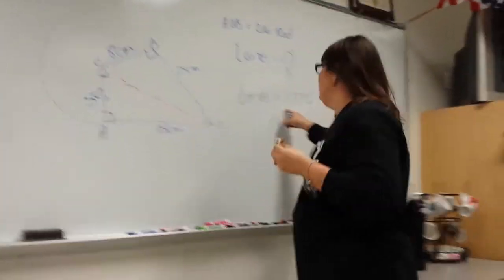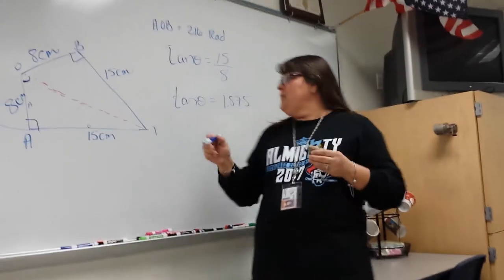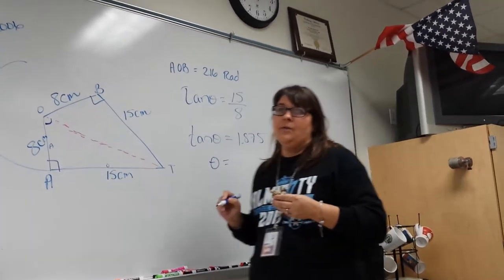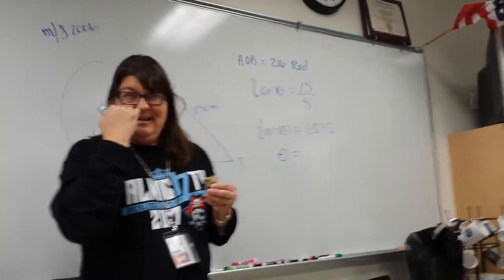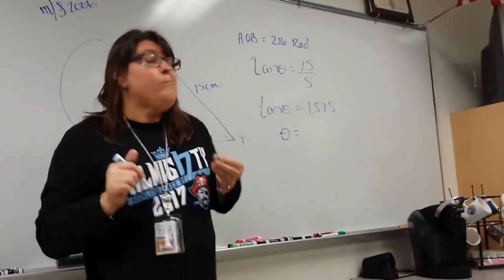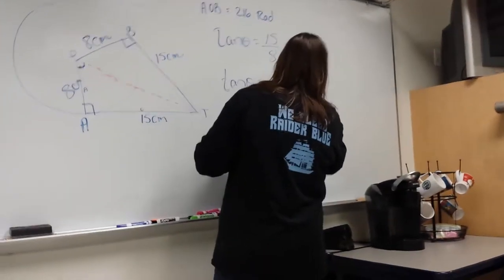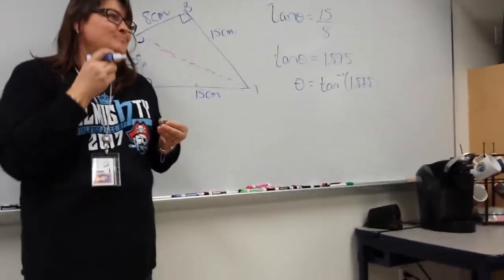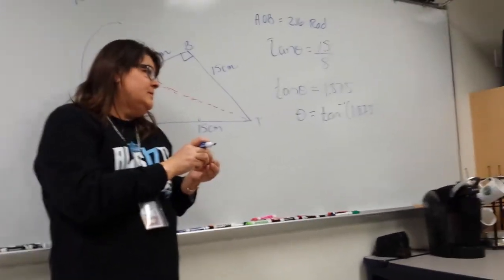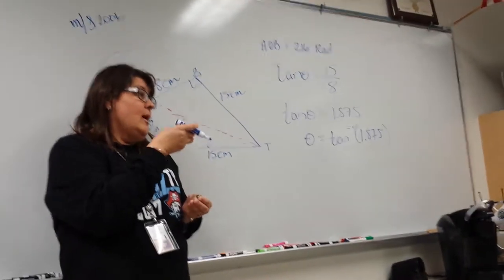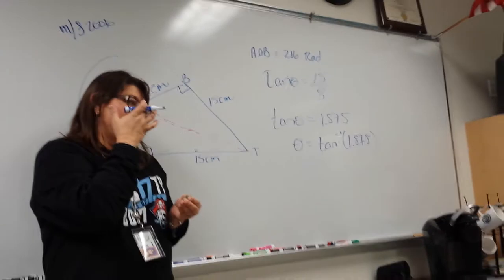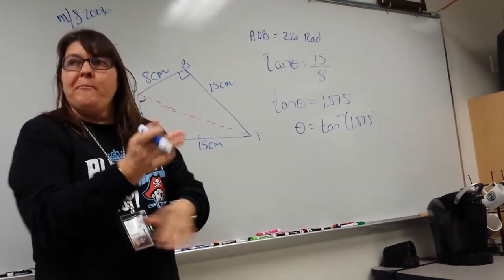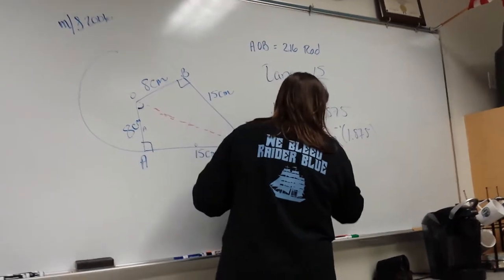Tangent theta equals 1.875 and my calculator is in the proper mode. To solve for the angle theta, you do theta equals tan to the negative 1 of 1.875 — that's the inverse, the arc tan. You're undoing the tan on the left by doing its inverse. You get theta is equivalent to 1.08.